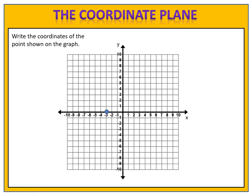Here's one for you to try. Can you write the coordinates of this point? Please pause the video and give it a try. We look at this point and we see that the x value is negative 3. We also see that the y value is 0. That gives us x is negative 3 and y is 0, so the coordinates are negative 3 comma 0.